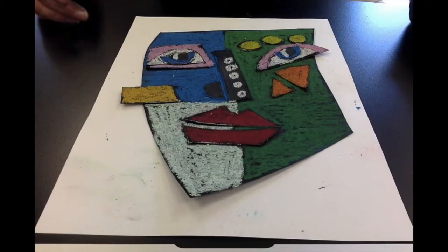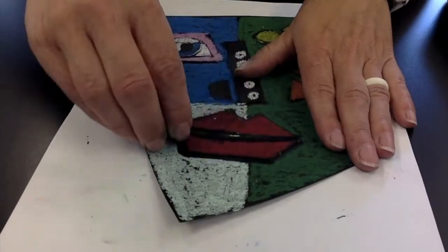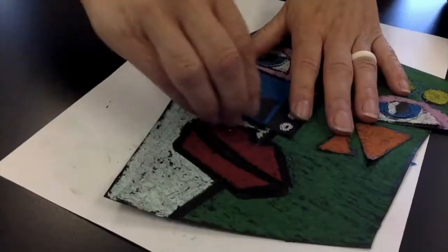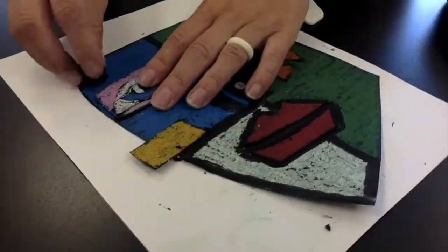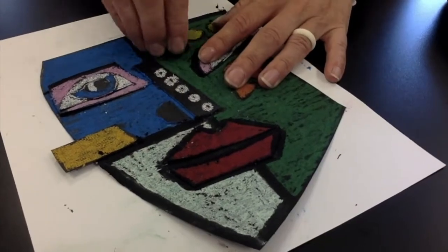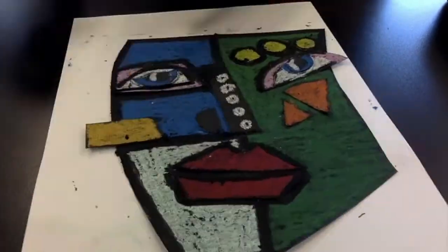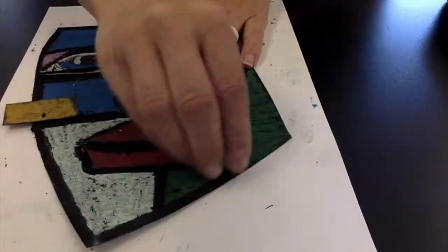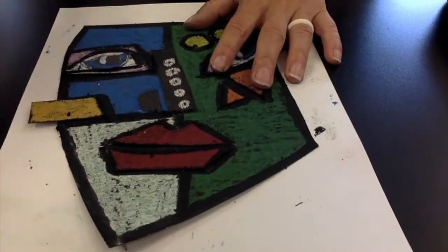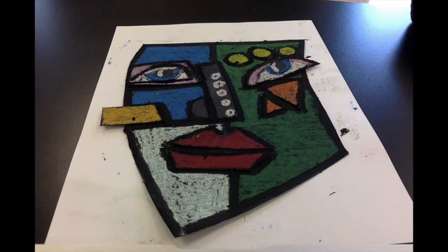Now that I've got it colored, I want to show you one additional step that'll really make it stand out. Take your black oil pastel. Even though it was spray-painted black, look at what this black oil pastel will do. It's going to define my colors and my shapes even better. So what I'm doing right now is outlining everything. The black oil pastel really makes it stand out.